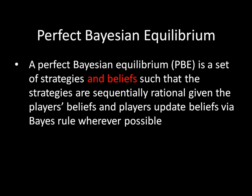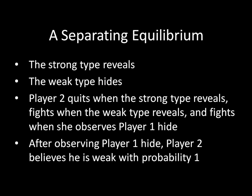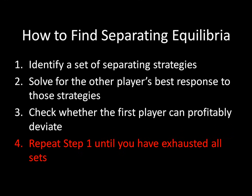So the beliefs here are going to be, again, what we derived via Bayes' rule wherever possible — and in that case all we have to do is add the fact that after observing Player 1 hide, Player 2 believes that he is weak with probability 1. So that gives us a separating equilibrium. Now, if we're trying to find all separating equilibria of a game, we have to repeat Step 1 until we've exhausted all possible information sets. So there's still one more thing that we have to do.